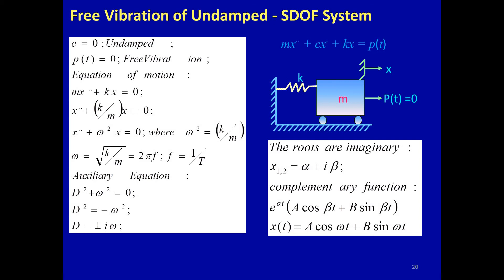For free vibration, p(t) = 0. If it were forced vibration, p(t) would have some value. x is the displacement component. For the undamped condition, c = 0 (no friction) and p(t) = 0. Substituting these boundary conditions into the equation of motion gives mẍ + kx = 0.